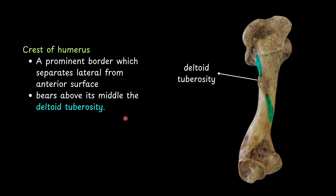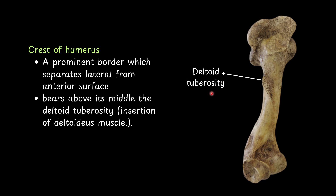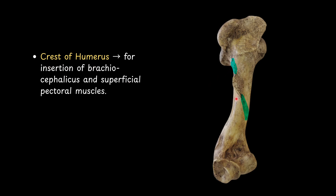The crest of the humerus is a prominent border which separates the lateral from the anterior surface. Above its middle it bears the deltoid tuberosity, which is the insertion for the deltoidus muscle. The crest of the humerus also gives insertion to the brachiocephalicus muscle and superficial pectoral muscles.